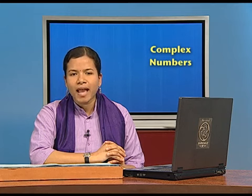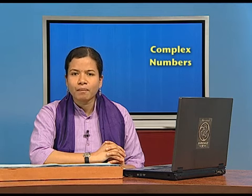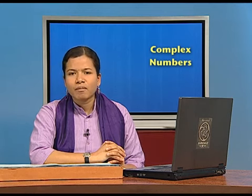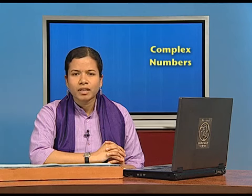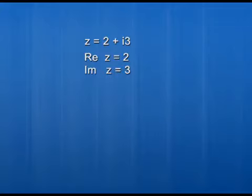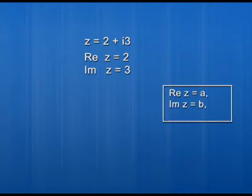Now suppose we already know the real part and imaginary part of a complex number — can we find the complex number? If the real part of z is a and the imaginary part of z is b, then yes, z will be equal to a plus ib. So knowing the real and imaginary parts, both of which are real numbers, allows us to reconstruct the complex number.